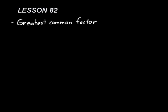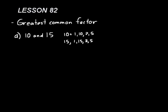Let's go ahead and do some practice problems. Let's find the greatest common factor between 10 and 15. We need to write down all the factors for 10, which would be 1 and 10, and 2 and 5. Those are all the factors for 10. Now for 15, we'd have 1 and 15, and then 3 and 5. Those are all the factors for 15.